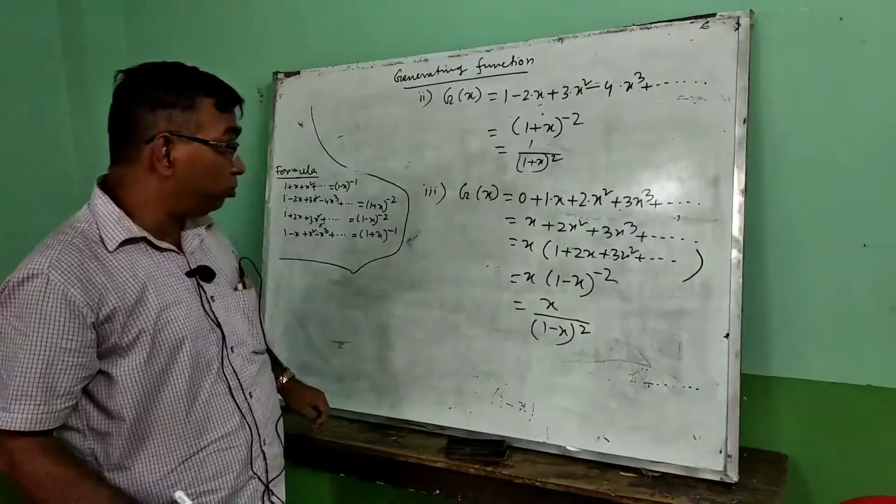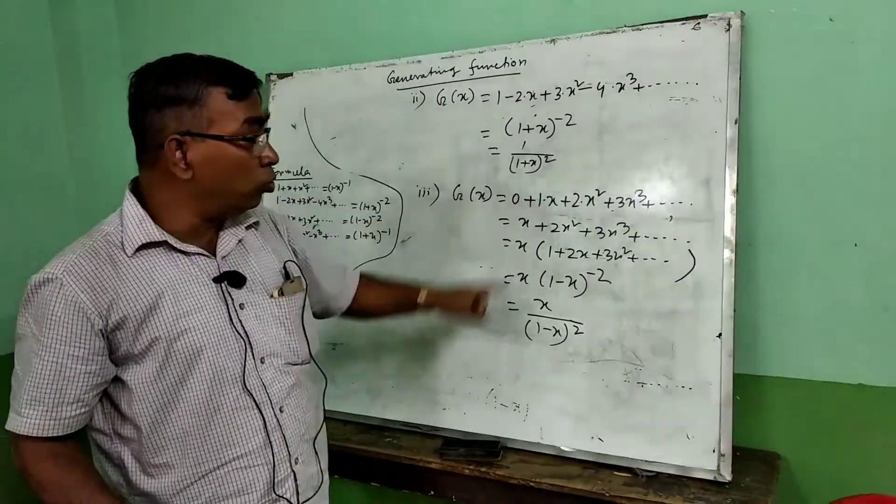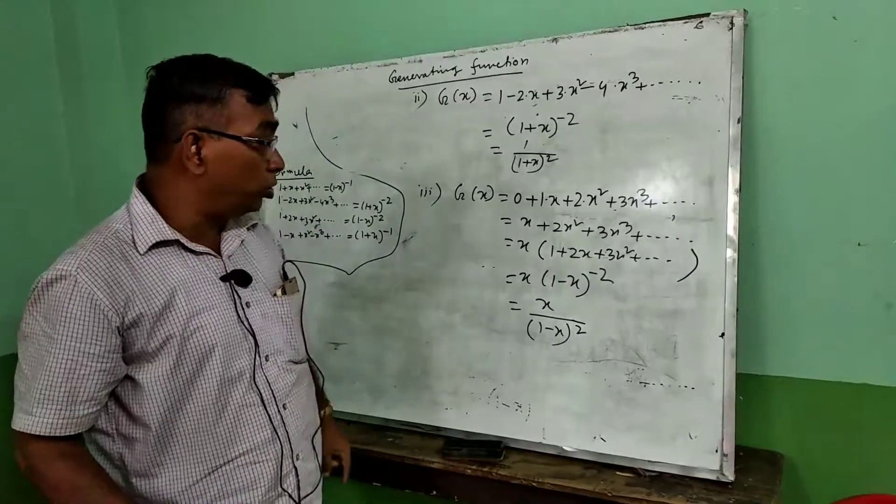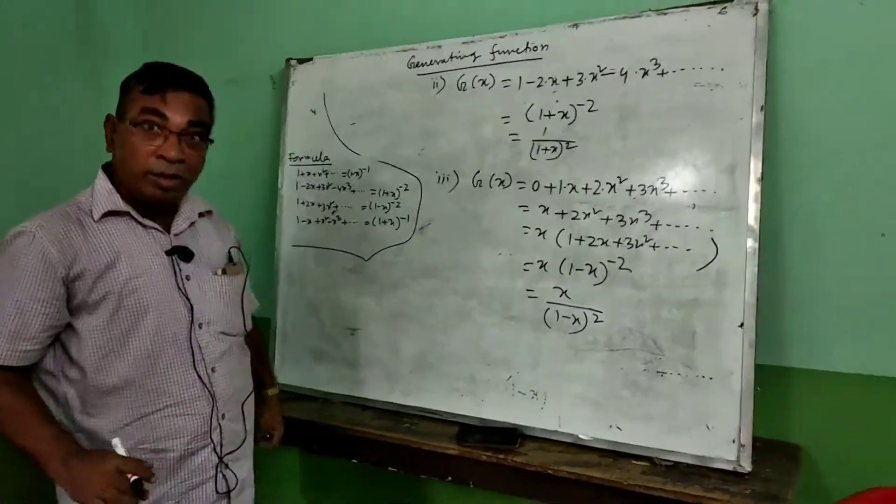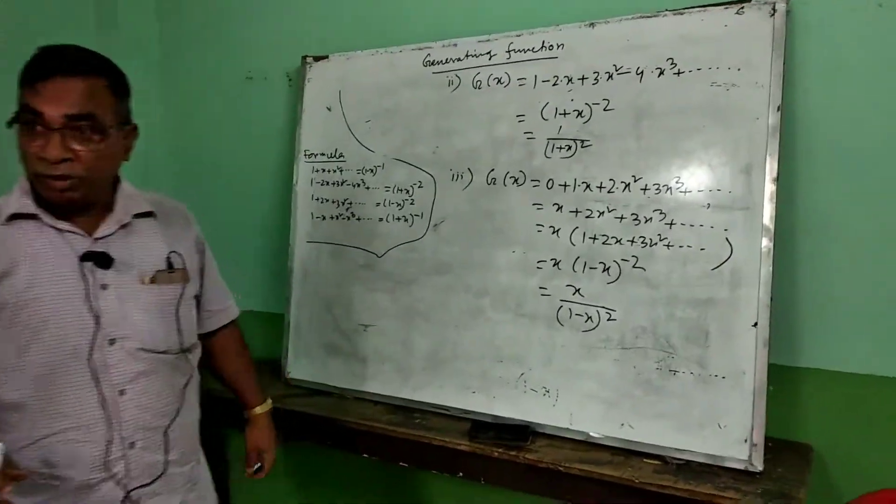So x/(1-x)² is the generating function for the sequence 0, 1, 2, 3, ... Thank you very much.